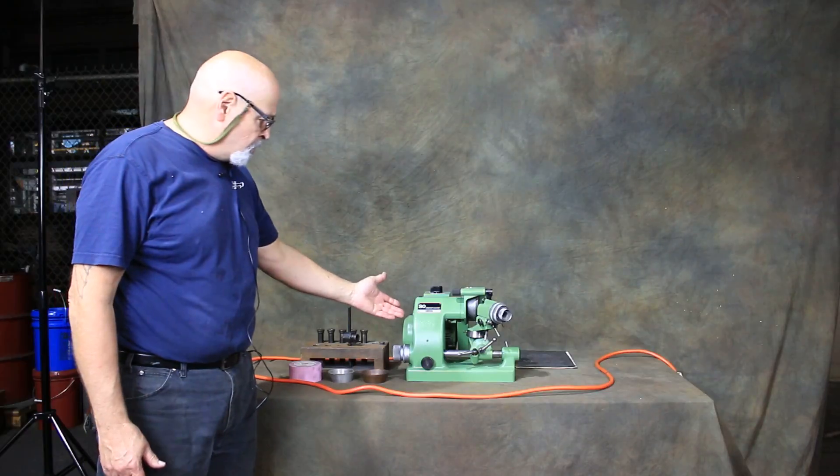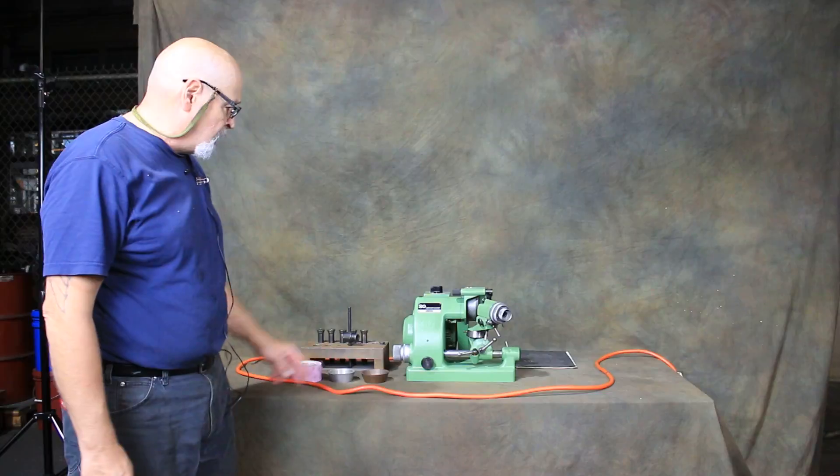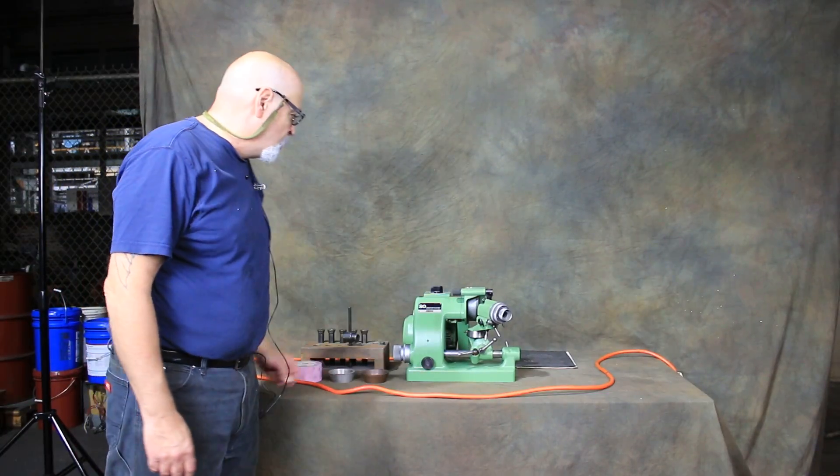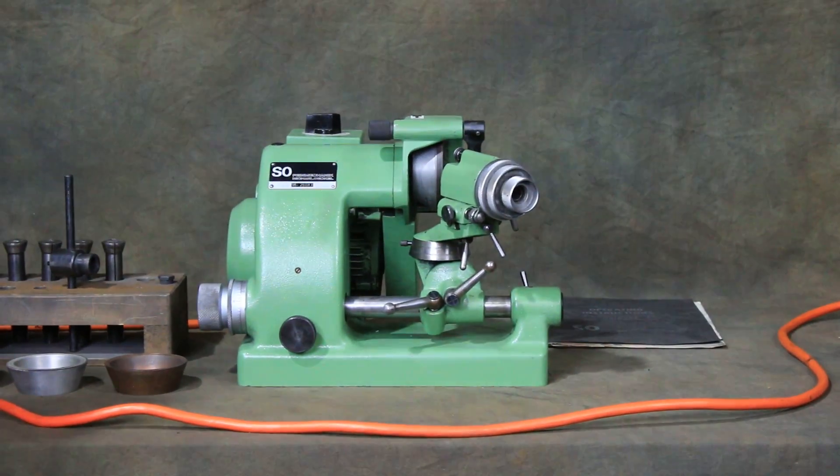We have here the machine itself, the basic machine, with the indexing head attachment and currently a cupped diamond wheel. This is regular 110, 115 volt AC. You plug it in the wall.